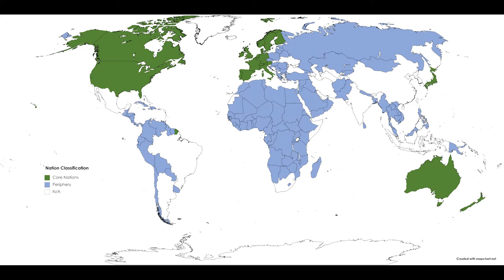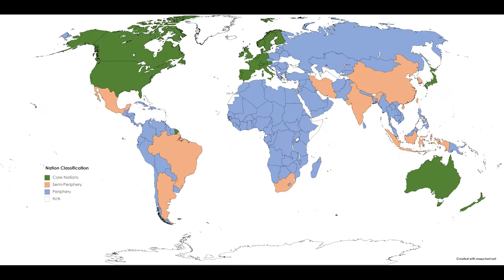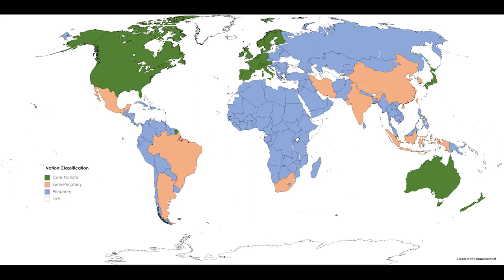Looking at the map, it's easy to apply world systems analysis and think about how the core nations are able to monopolize the most profitable products, information, and services — for example, technology, data, and finance — while the peripheral nations are forced to compete with other peripheral nations in the production and trade of less profitable products such as textiles, furniture, certain food products such as cattle, coffee, and corn, and so much more.